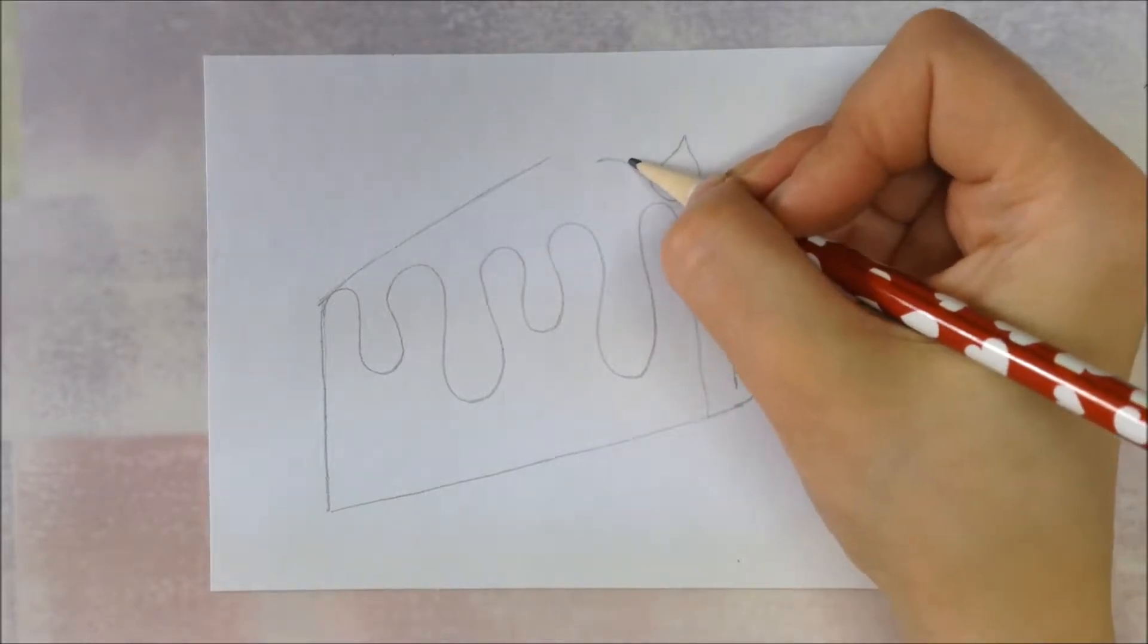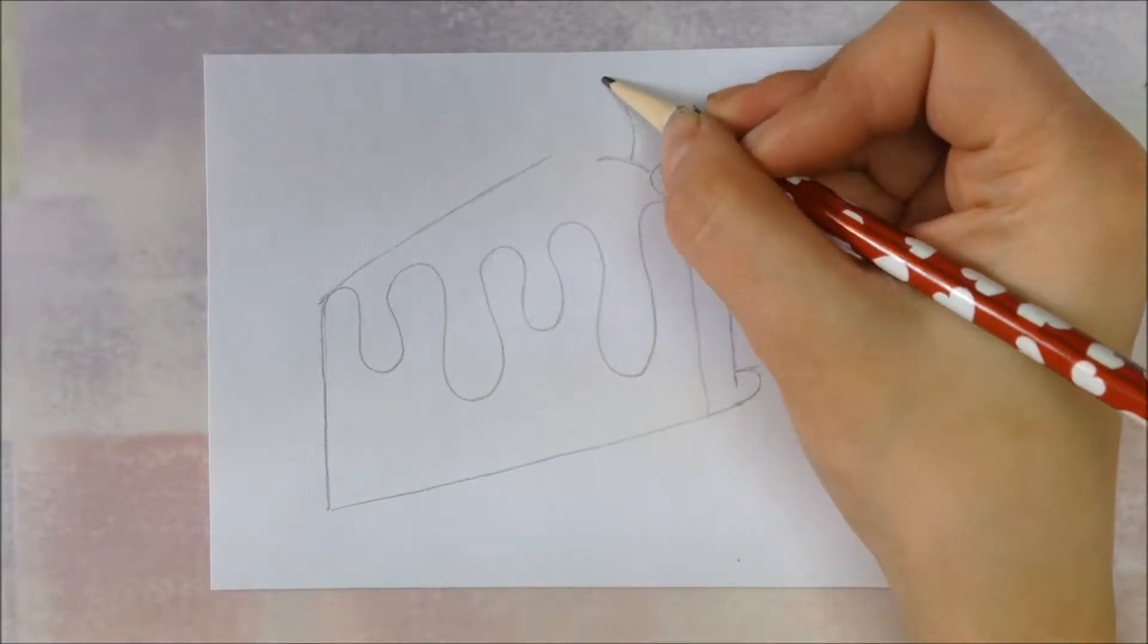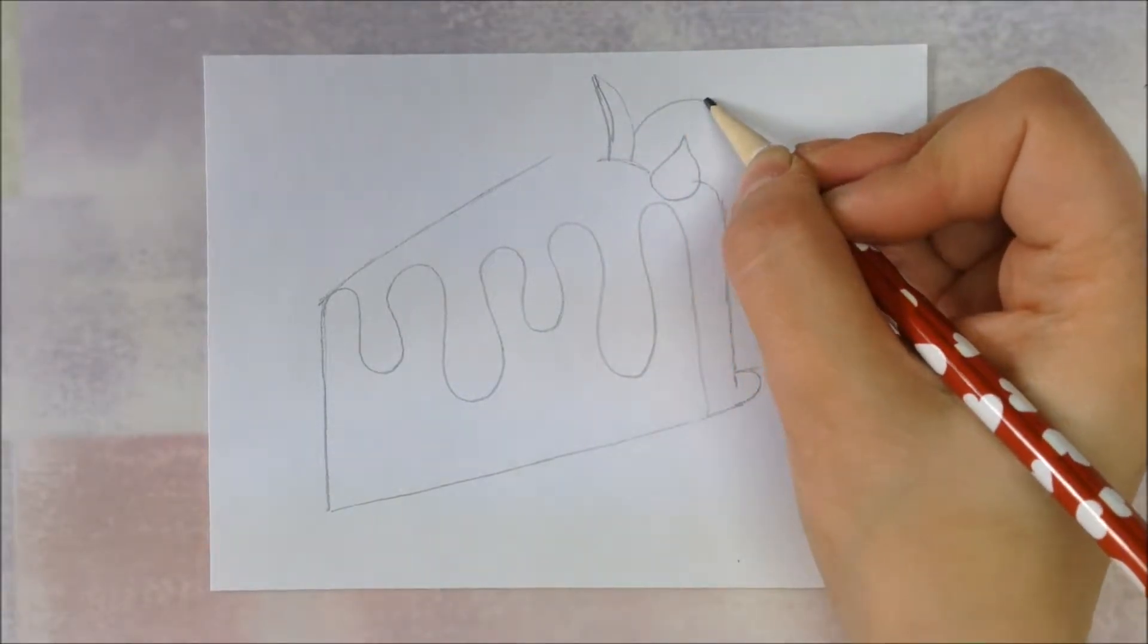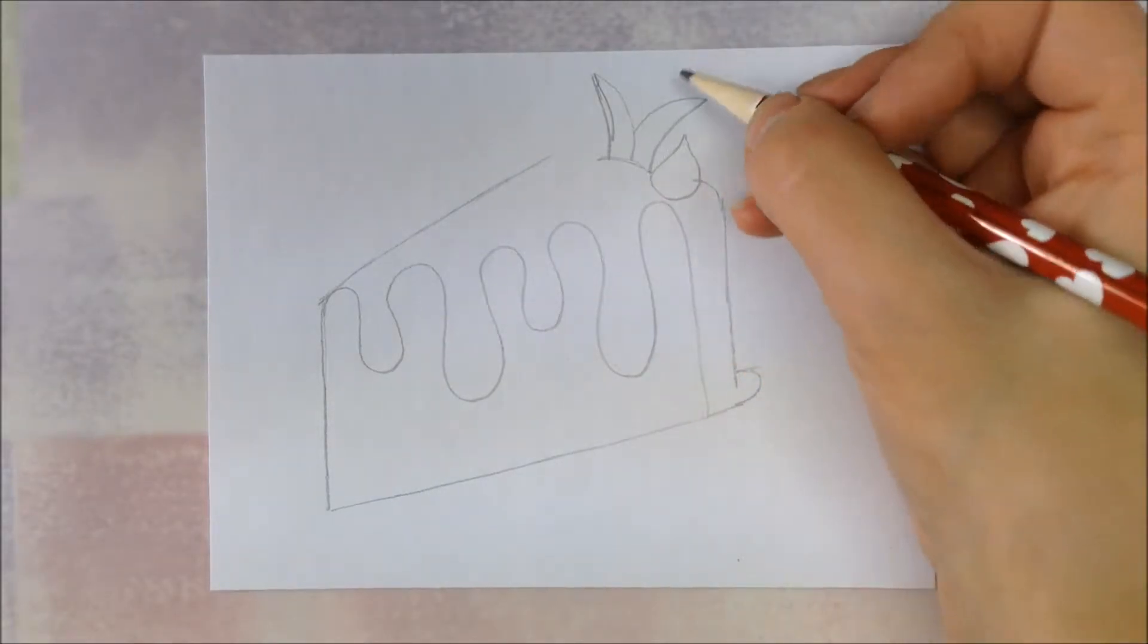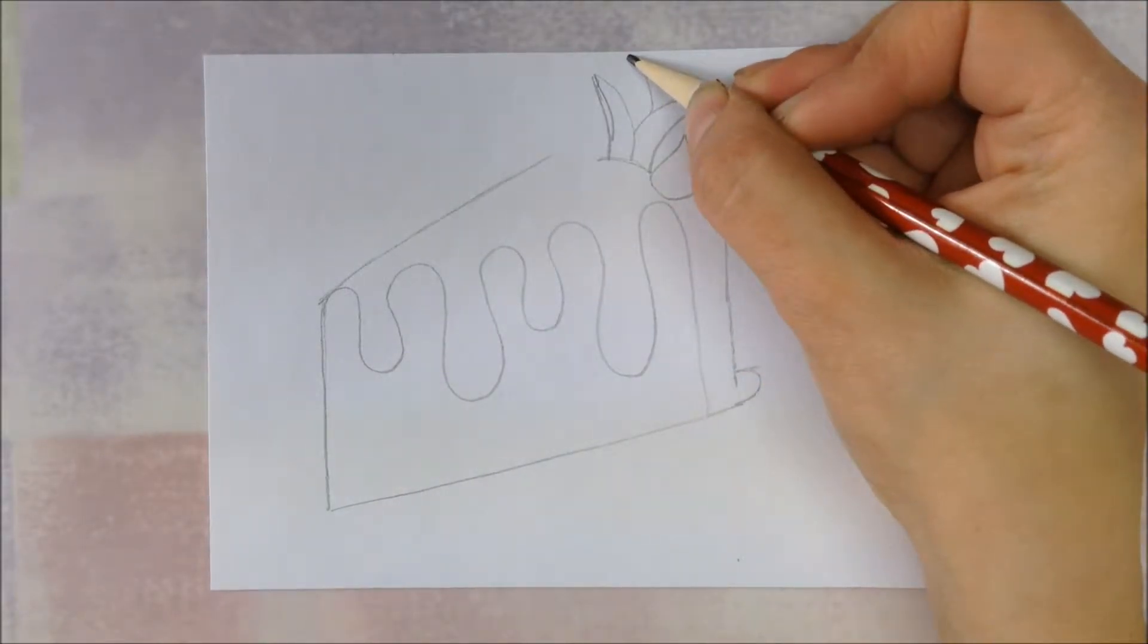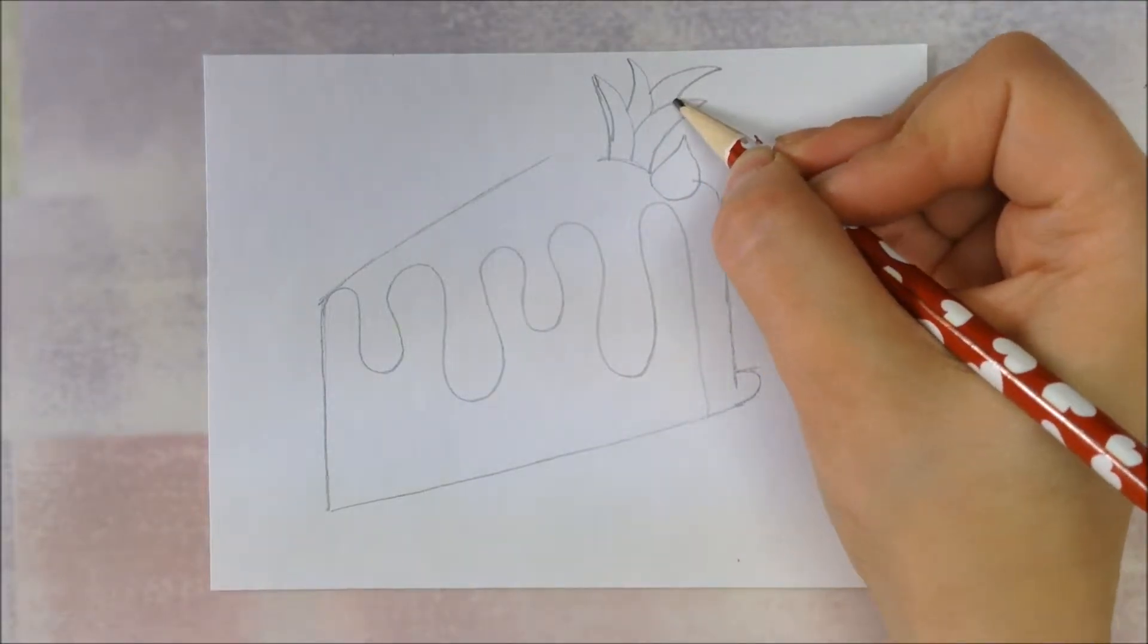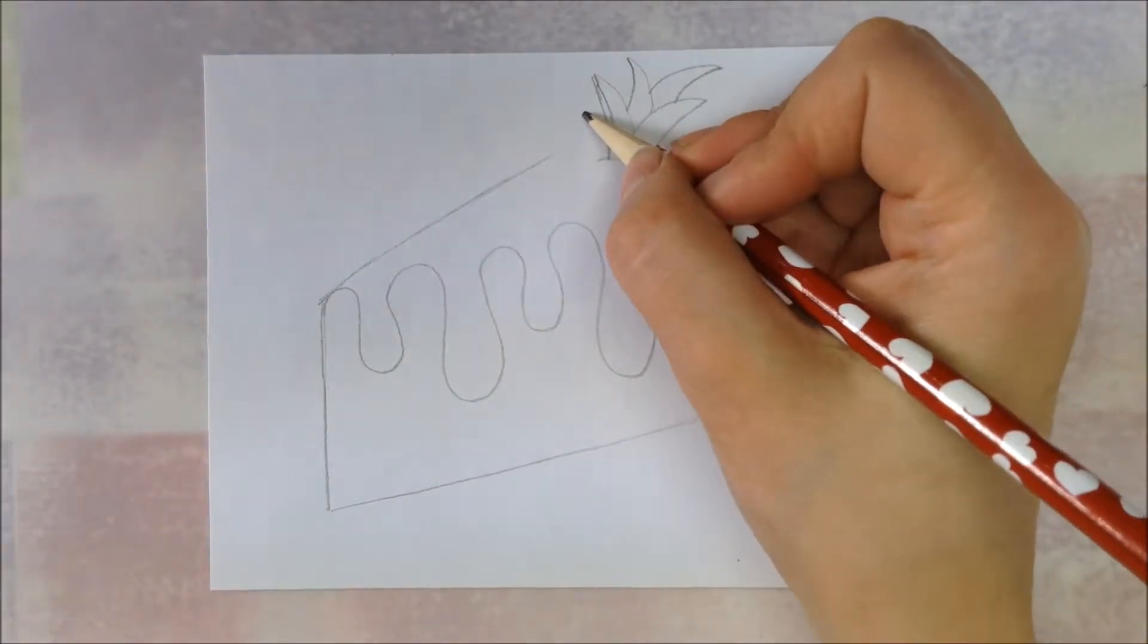So I draw a line that shows the edge of the cake. Draw a curve line up and curve back down. This will be the leafy part. Another curve up and down, and then a curve up and down, and one more. And then one more dollop of icing.